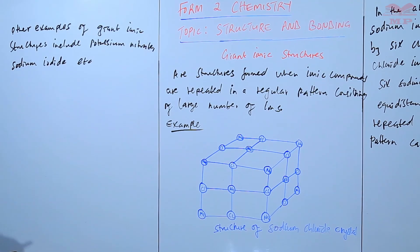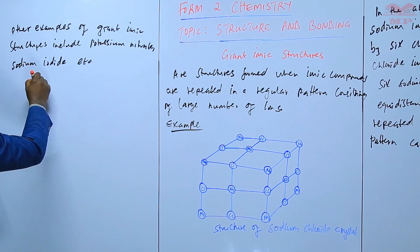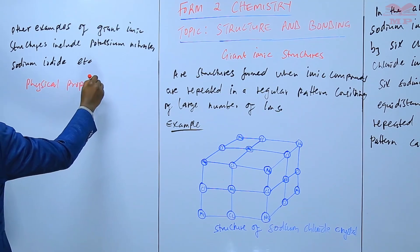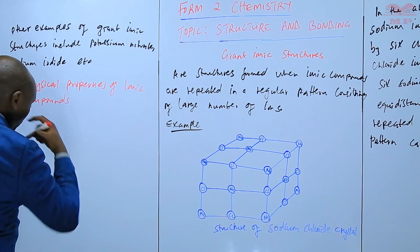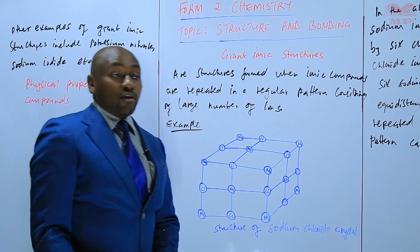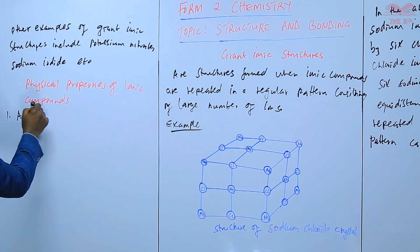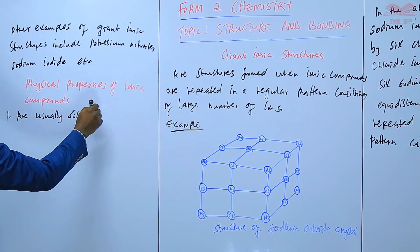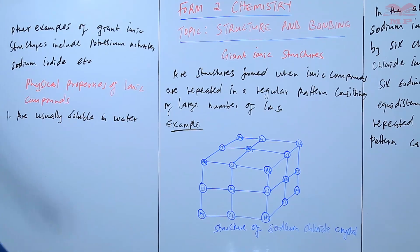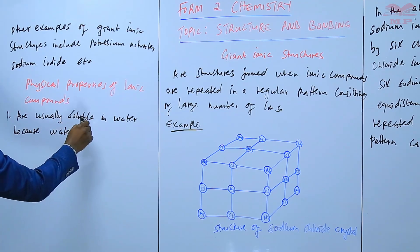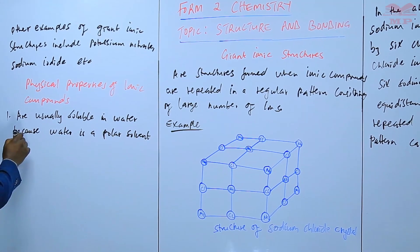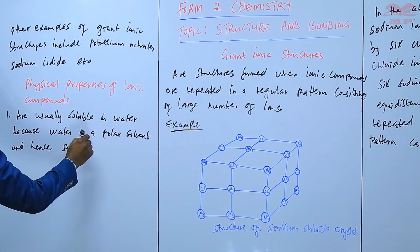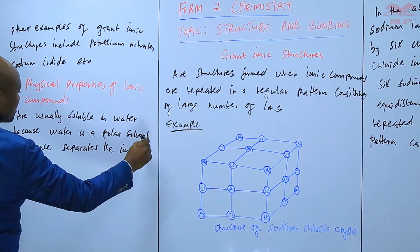Next, let's identify the physical properties of ionic compounds. These are the compounds with ionic bonds. Number one is that they are usually soluble in water — most of them are soluble in water — because water is a polar solvent, and it separates the ions in the structure or in the compound.